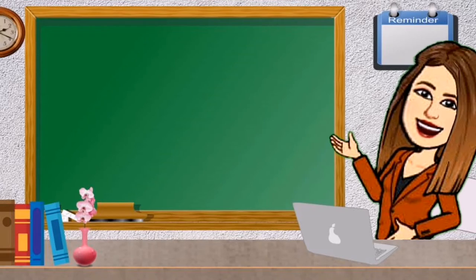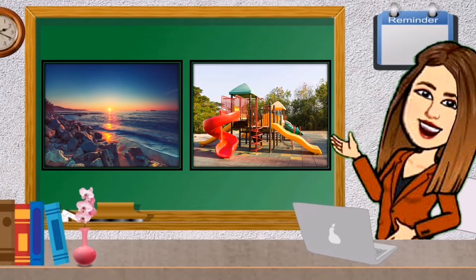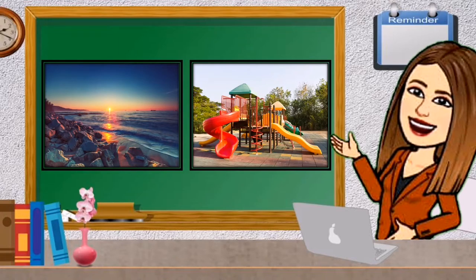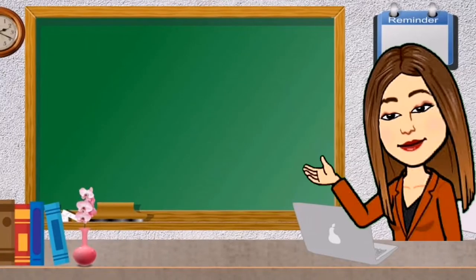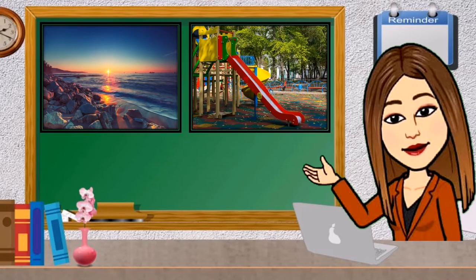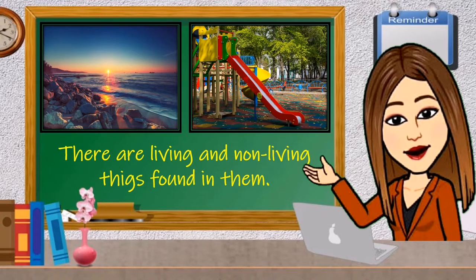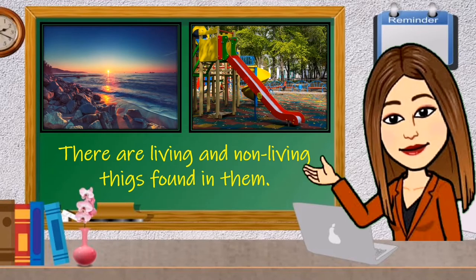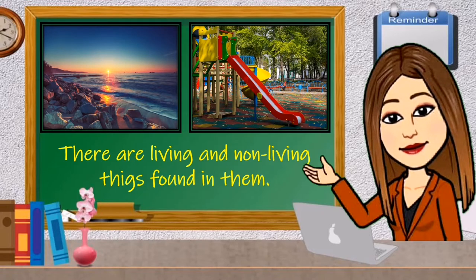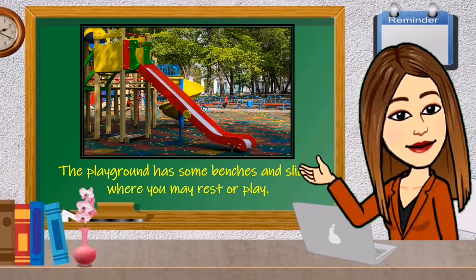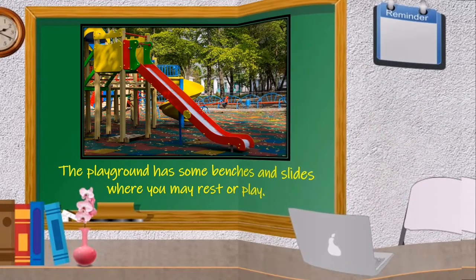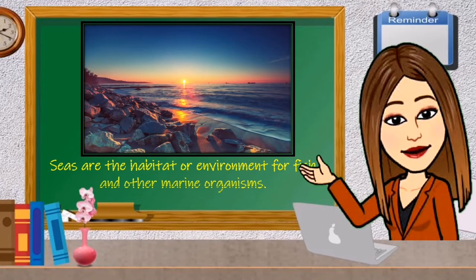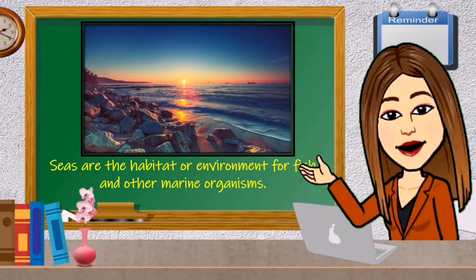Have you been to this place? Have you enjoyed your activities in this kind of place before the pandemic occurred? The immediate place where you are exposed to is your environment. There are living and non-living things found in them. What are the living and non-living things found in the sea and playground? The playground has benches and slides where you may rest or play. Seas are the habitat or environment for fish and other marine organisms.